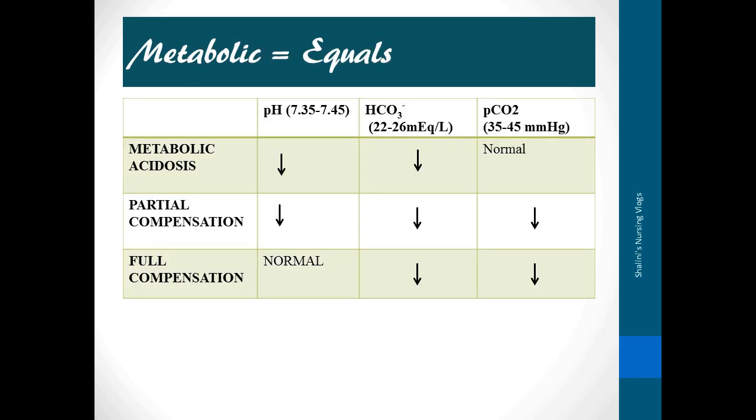Technically, when the direction of the defect is the same, it's metabolic. If pH and HCO3 fall together, it's metabolic acidosis. In compensation, PCO2 is also let out of the body, so PCO2 reduces. When all three reduce, it's partial compensation. When pH is brought back to normal between 7.35 to 7.45 through compensation or supportive therapy, it's full compensation.